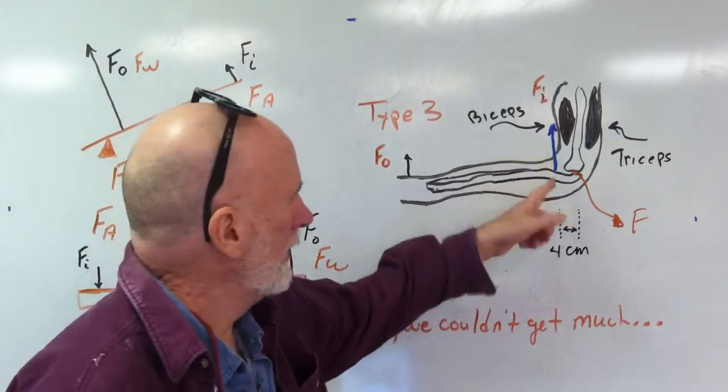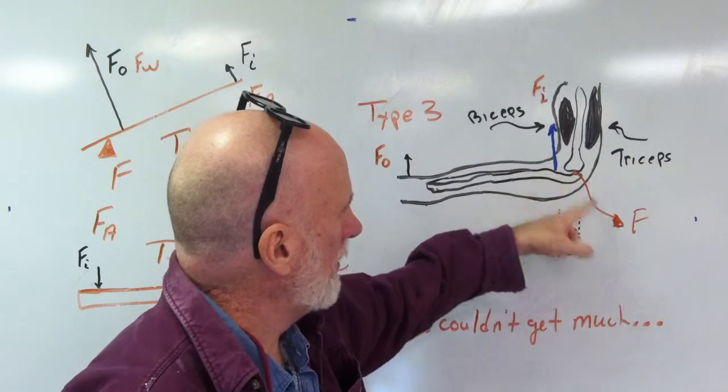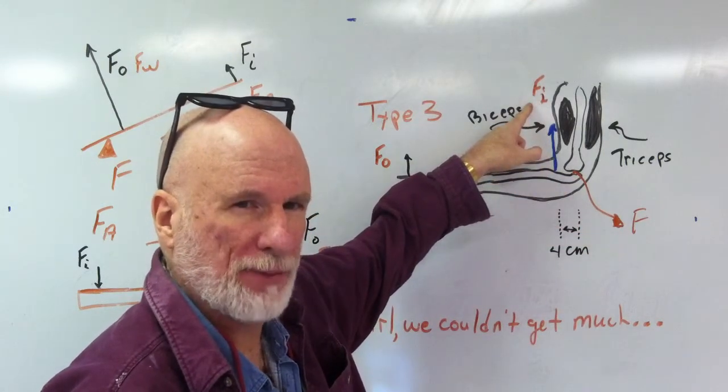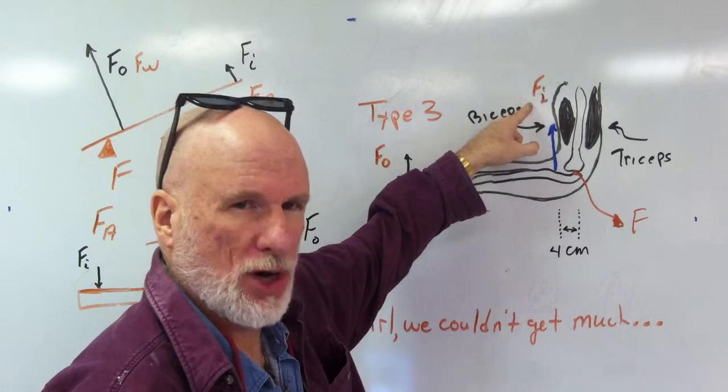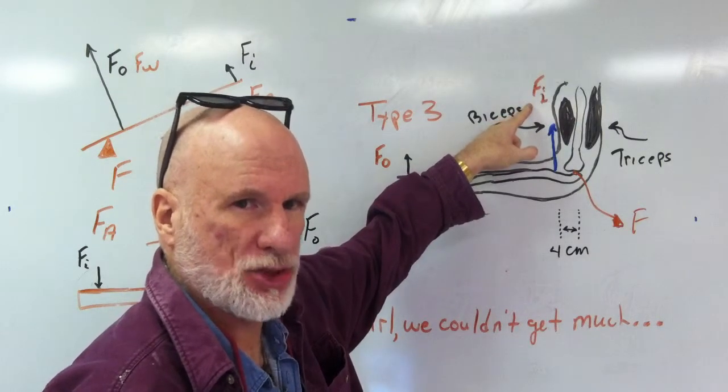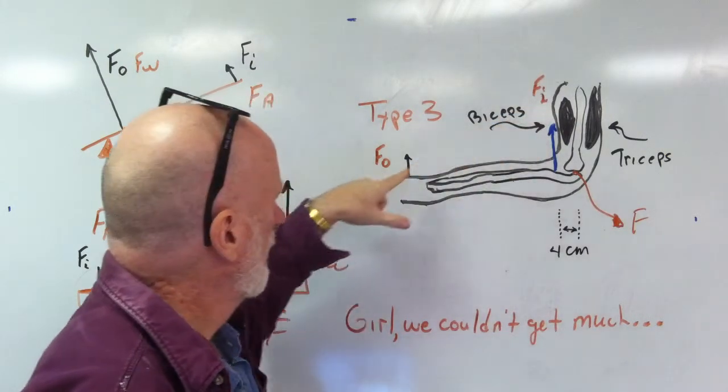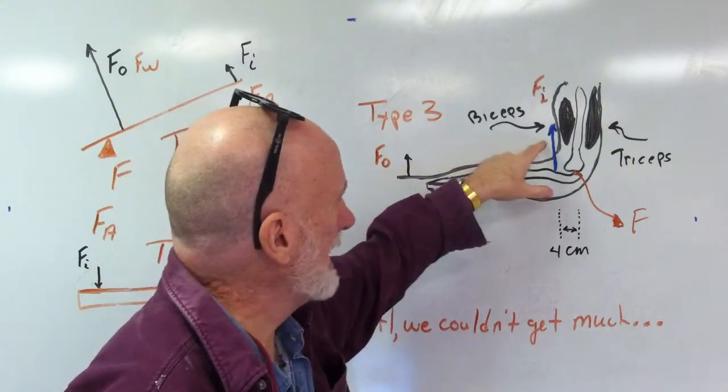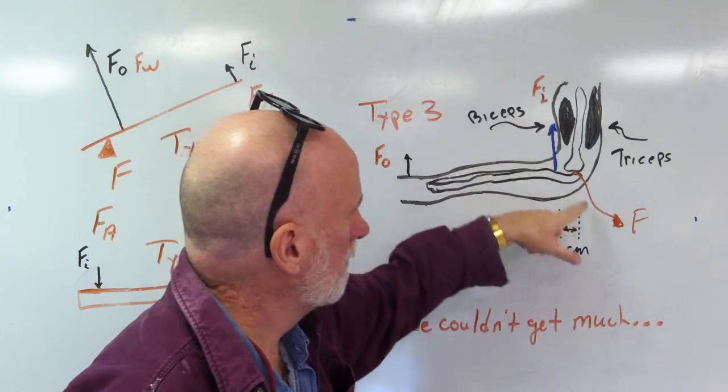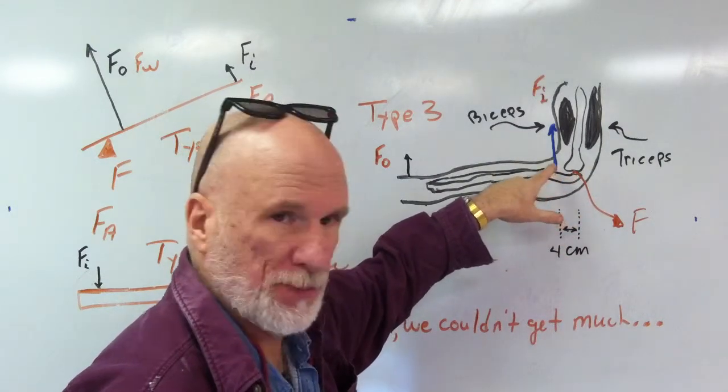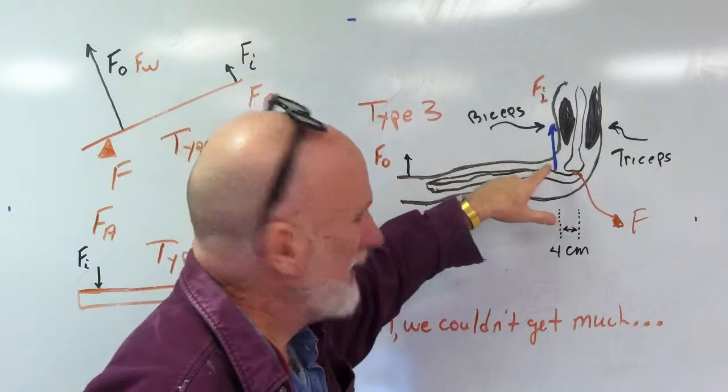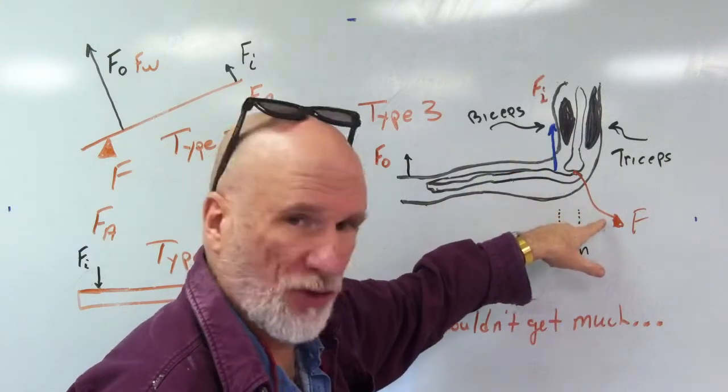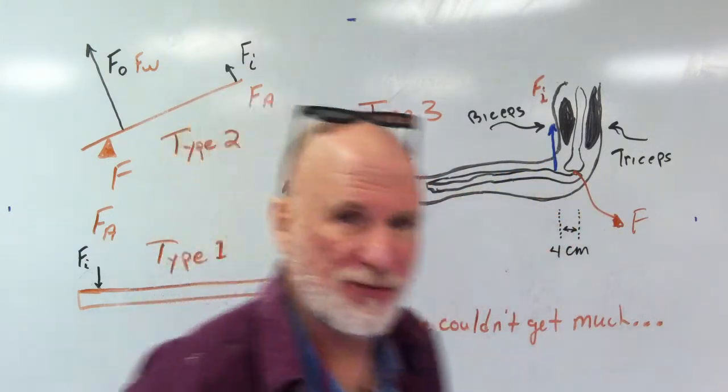Type three, that's the fulcrum there, that's the input force, remember? She works hard for the money, the waitress carrying the tray of food. The load, that's the load, that's the actual tray, that's the input force. Now look, fulcrum, input force, output force. The input force is between the fulcrum and the output force, okay?